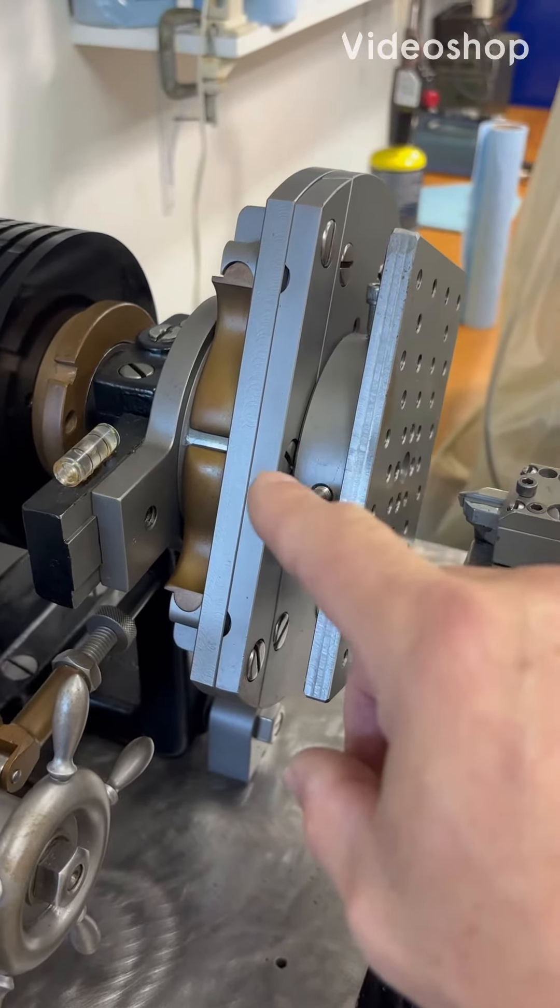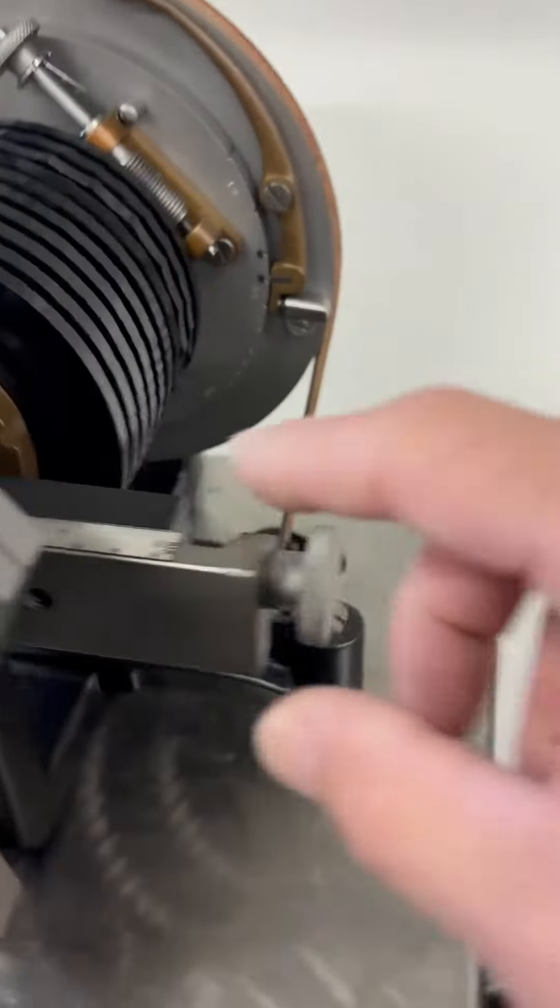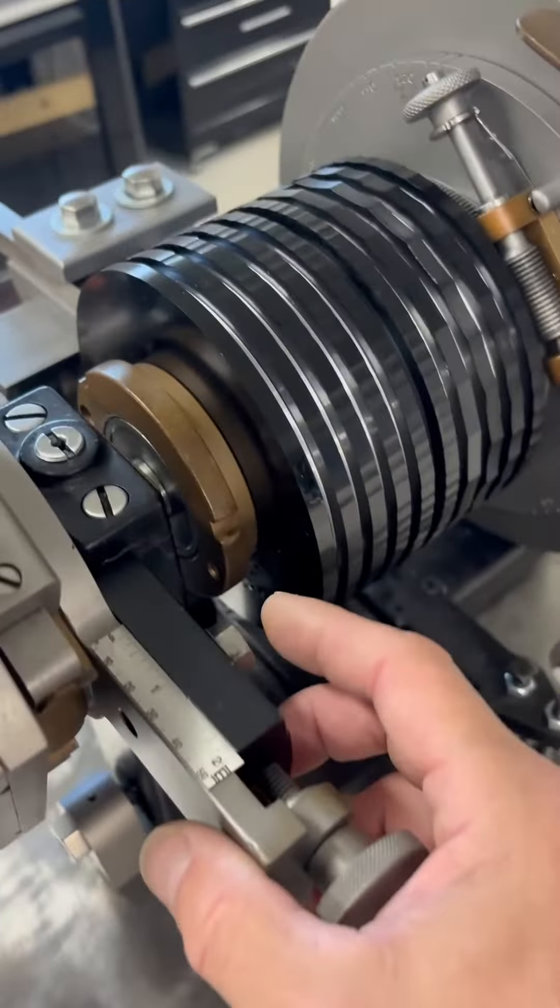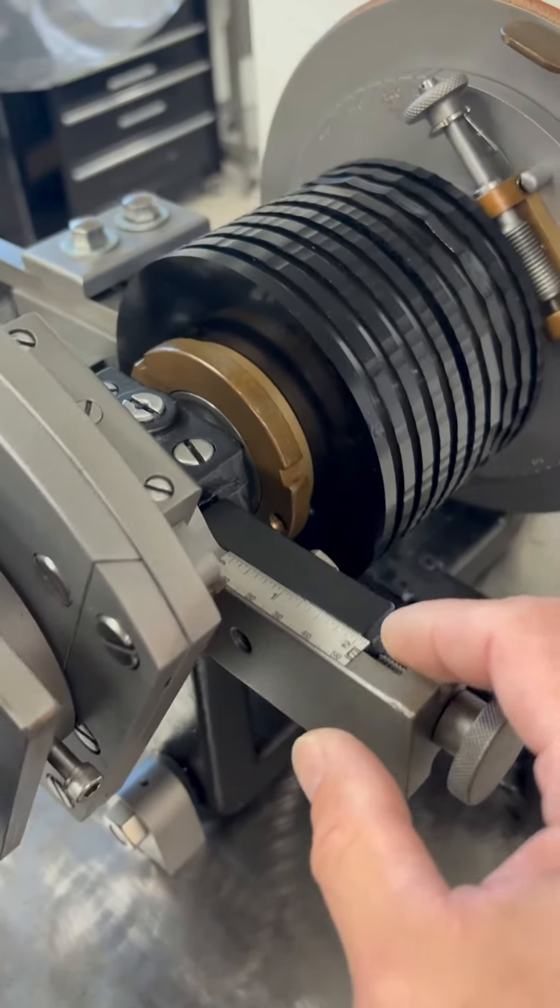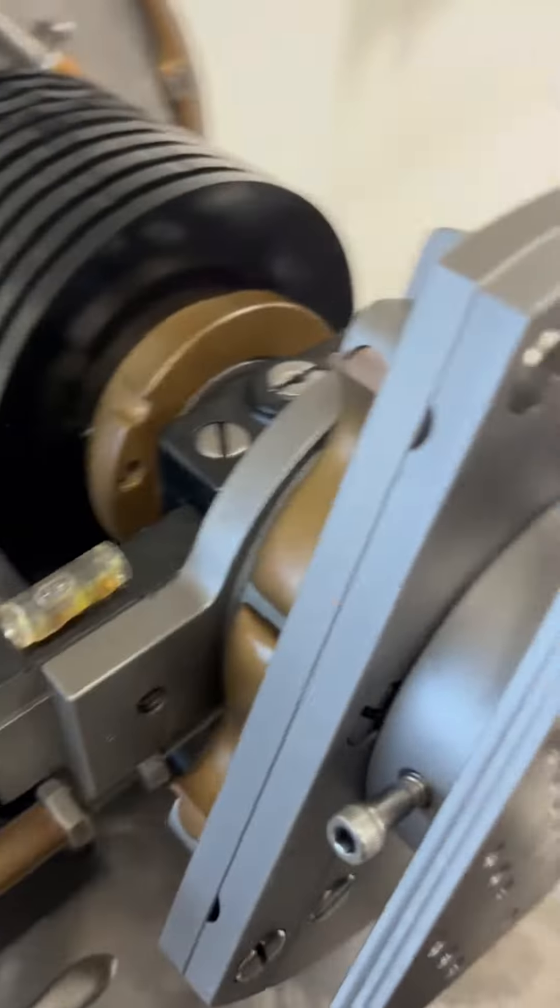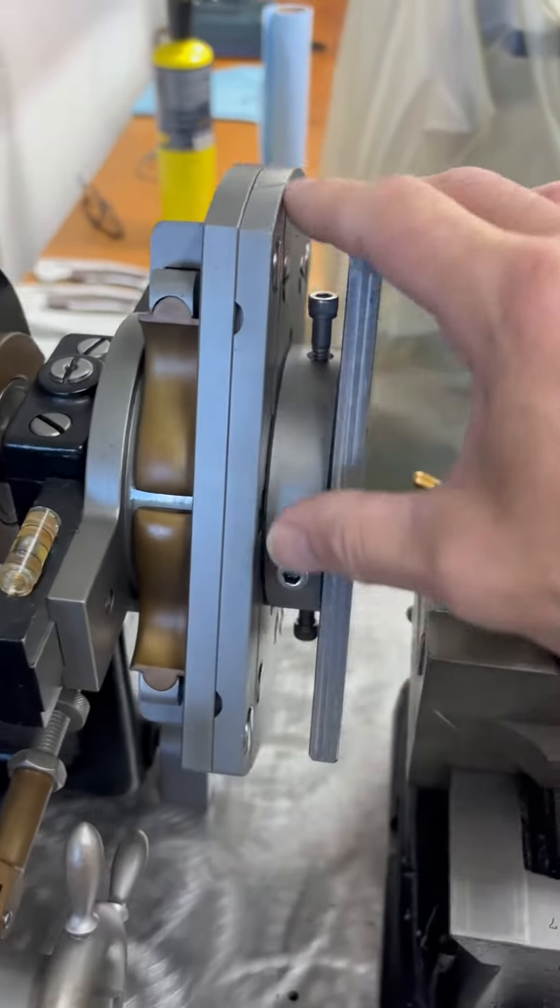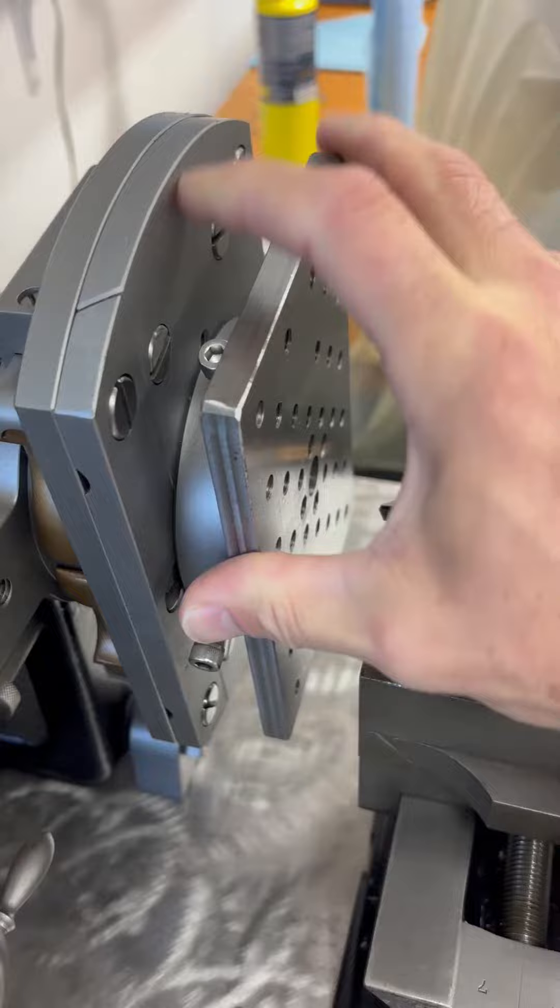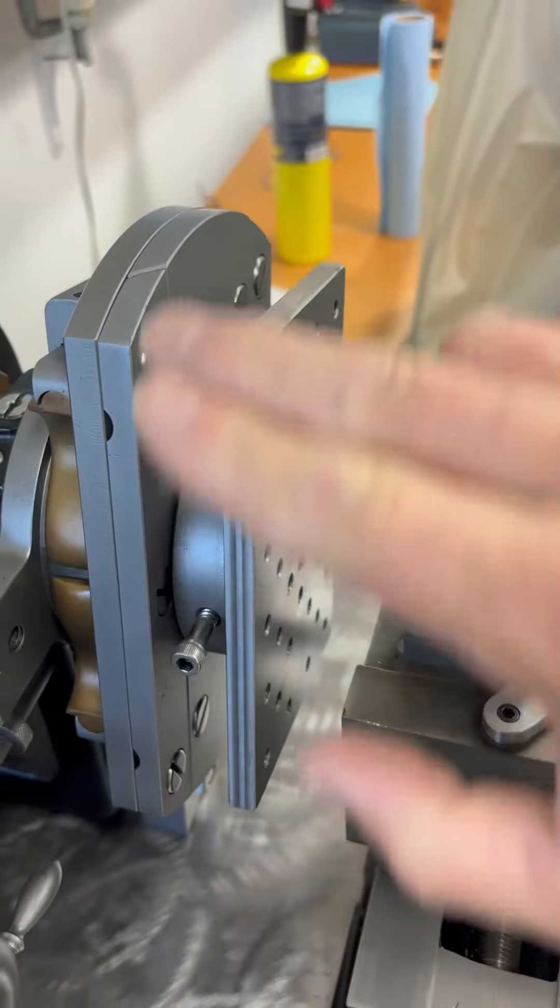This is an elliptical chuck. The way it works is you loosen the bolts back here and turn this knob, which offsets this to one side. Then the centerpiece will oscillate in an oval movement.